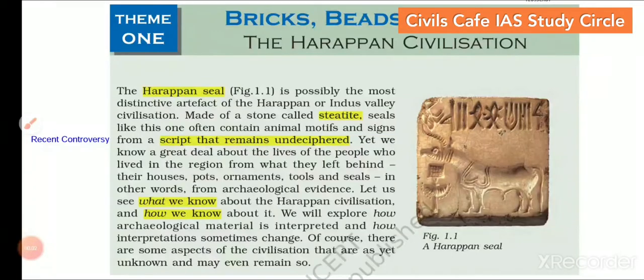Hi friends, welcome back to the NCRT explainer series. We have already completed class 6, 7 and 8 history NCRTs. Now we are going to discuss class 12 NCRTs, which cover three parts of history: ancient, medieval and modern history of India. In class 11, we will learn world history for main exam purposes. So presently, we will discuss about class 12 NCRTs.